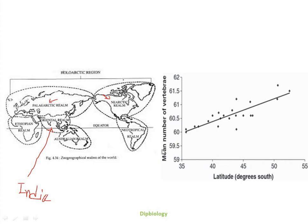If we compare the population of the same species present in these four equatorial regions with the population in Palearctic and Nearctic zones, we can observe that the animals of Palearctic and Nearctic realms have a maximum number of vertebrae, scales, or fin rays and other meristic characters, in comparison to warmer regions like the Ethiopian, Oriental, and Neotropical realms.